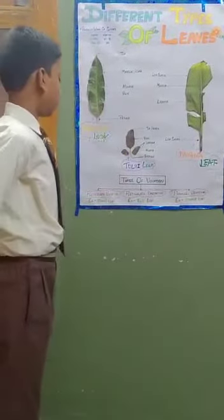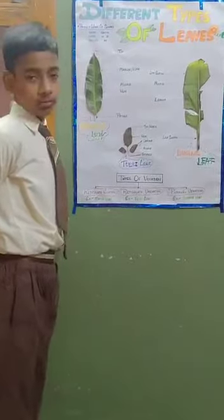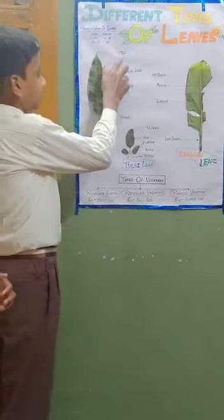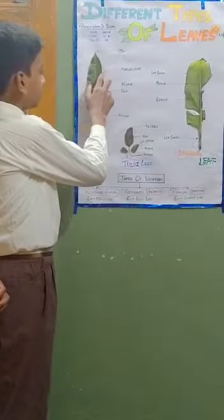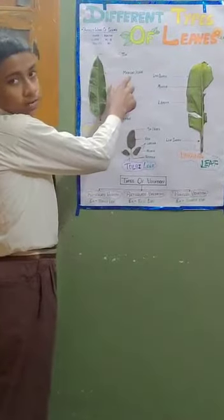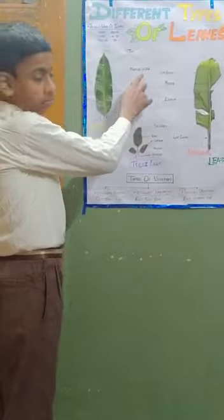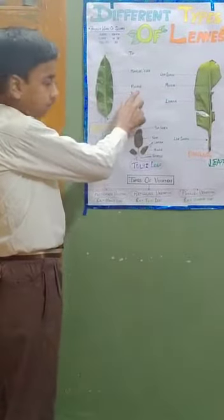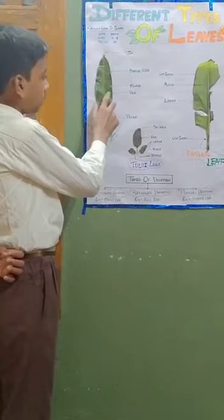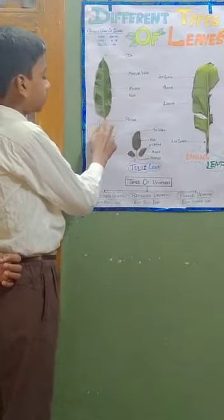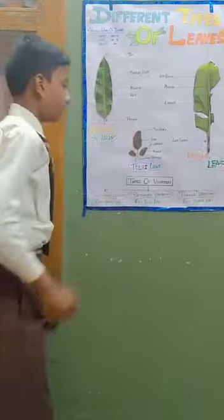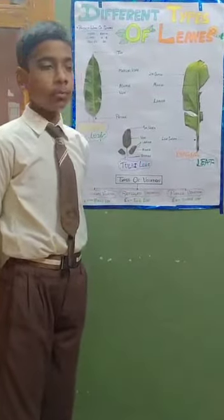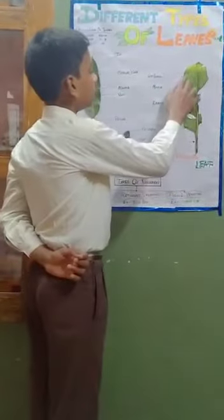First, here we have the mango leaf. This part is denoted as a tip. This part is denoted as a margin, or apex, or edge. This part is denoted as a midrib. This part is denoted as a vein. This part is denoted as a petiole.